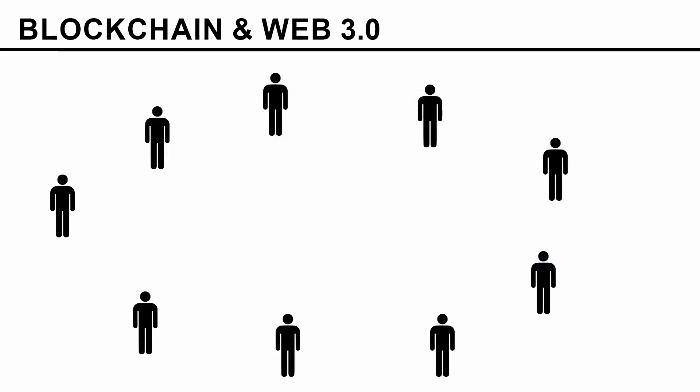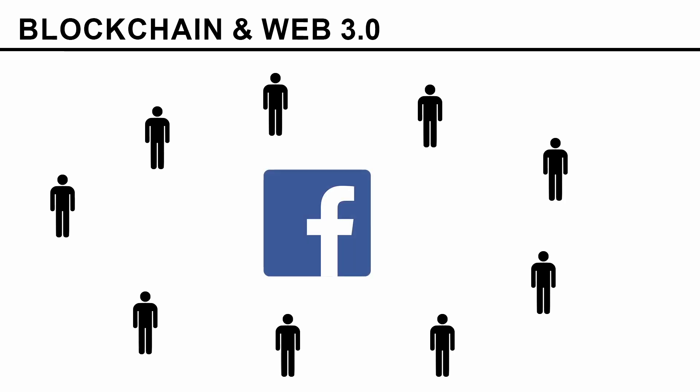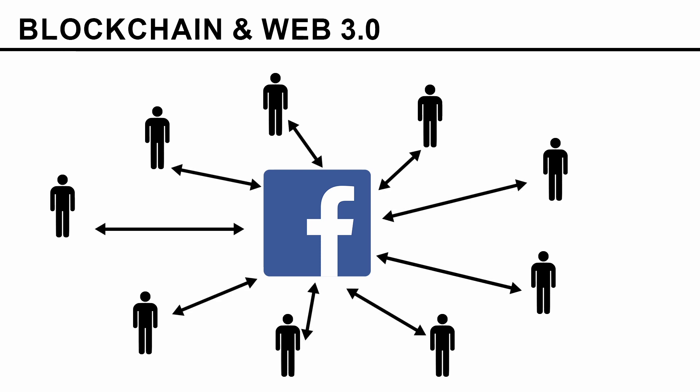Here we have people from all around the world who are all interconnected. Consider Facebook — it has its own central server and all data is stored there. We interact with Facebook servers and services, which then allows us to connect with each other. So Facebook acts as a middleman, meaning we are interacting through a central server. They have control over our data and our privacy, they can show us whatever ads they want, and they can charge us if they want. There is a lot of control we are giving away to them.